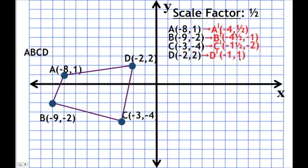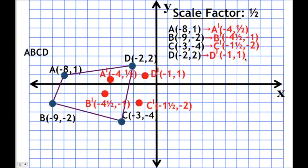The last thing to do is plot our new points — our primes. We're plotting A prime at (-4, 0.5), B prime at (-4.5, -1), C prime at (-1.5, -2), and D prime at (-1, 1). We then connect our points, and that's our figure A prime, B prime, C prime, D prime.